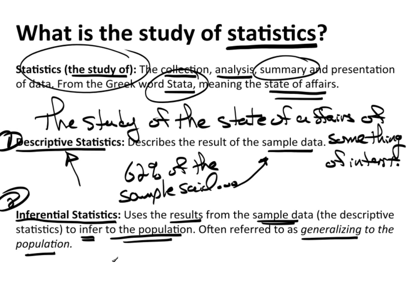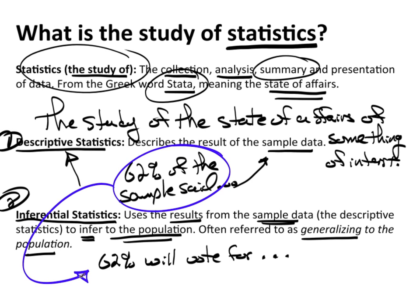Now, if I take the 62% and I say something like 62% will vote for candidate X, whoever, what I've done is I've taken this estimate right here from the sample, and I've used that to say, my best estimate is really 62% of the entire population will vote for this candidate. So this is my prediction. I am inferring what's going to happen with the population based on what I saw with the sample.